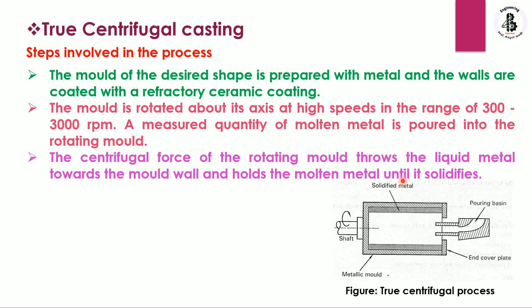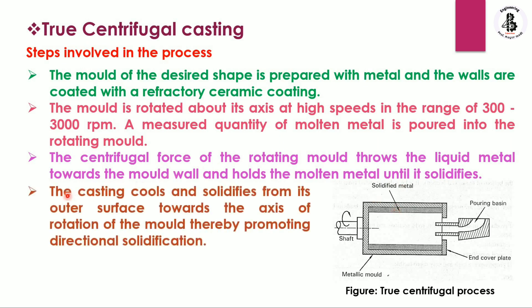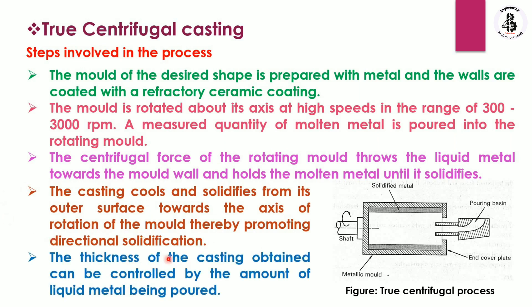The total solidification process occurs inside the metallic mold during the rotating condition. The casting cools and solidifies from its outer surface towards the axis of rotation of the mold, promoting directional solidification. Controlling directional solidification is a very important point in any casting process — it generally proceeds from the outside towards the axis of the rotating mold. The thickness of the casting can be controlled by the amount of liquid metal poured, which must be calculated based on the required volume for the desired thickness.